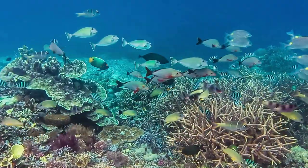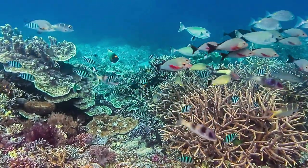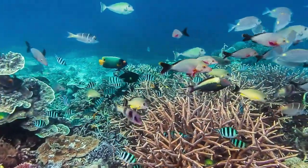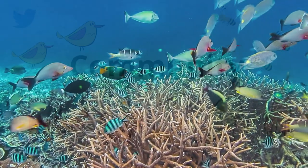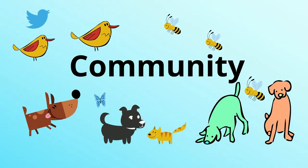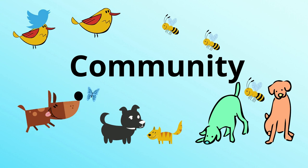If you have different populations living together, you have a community. A community does not include the non-living factors, also called the abiotic factors.